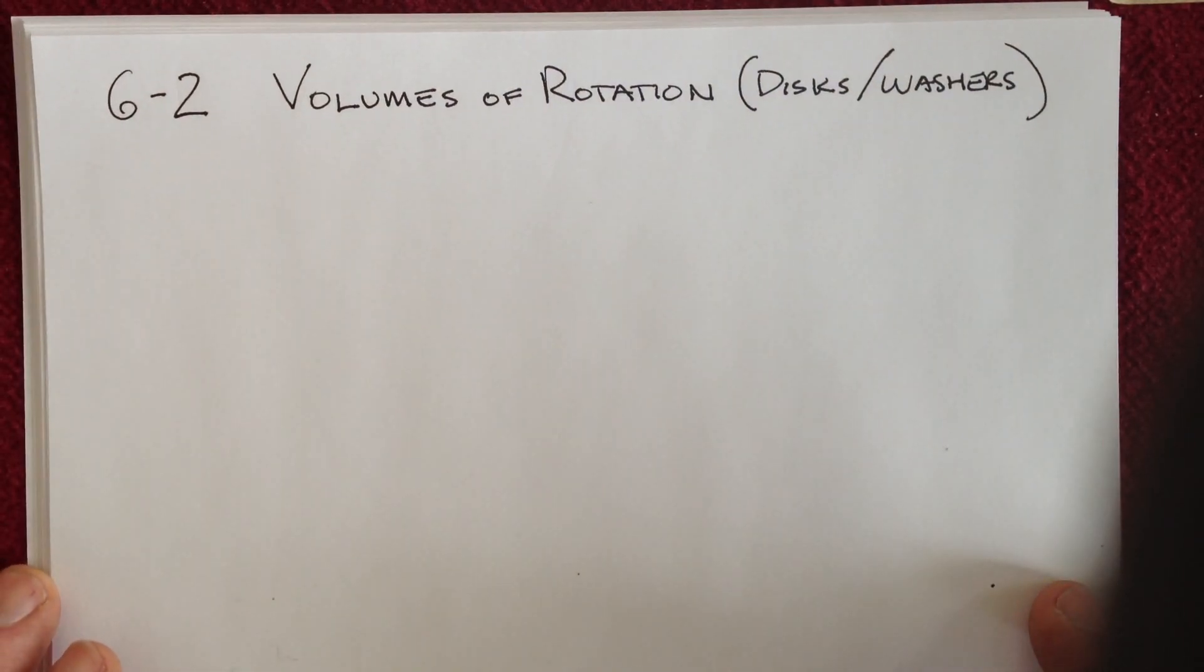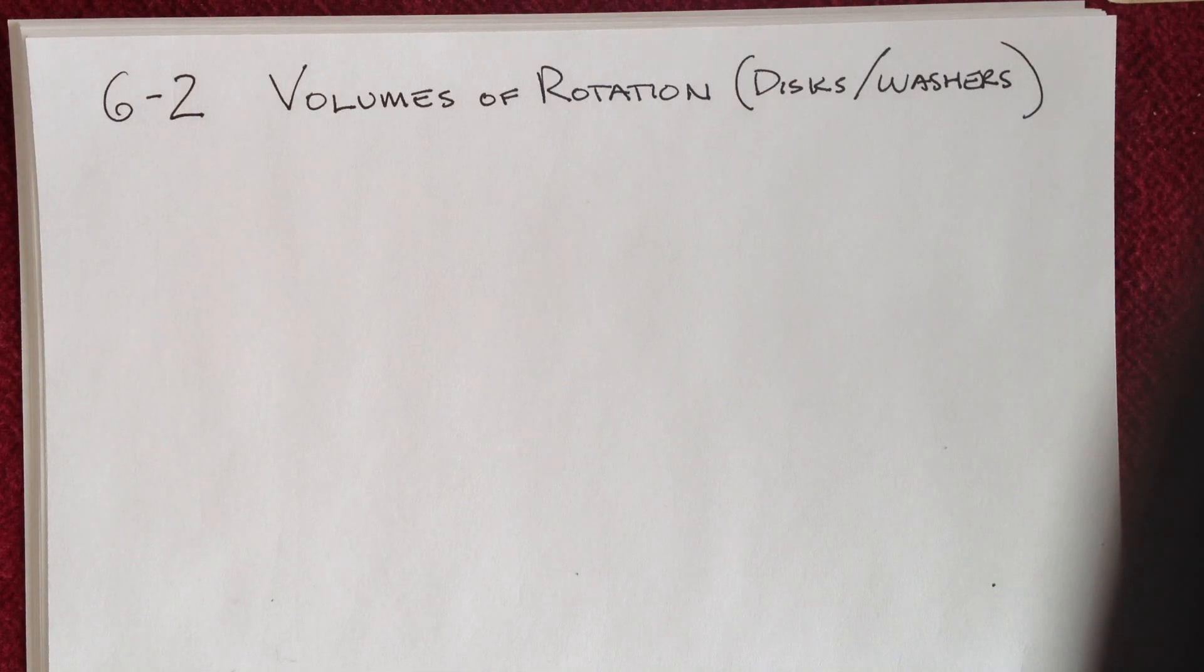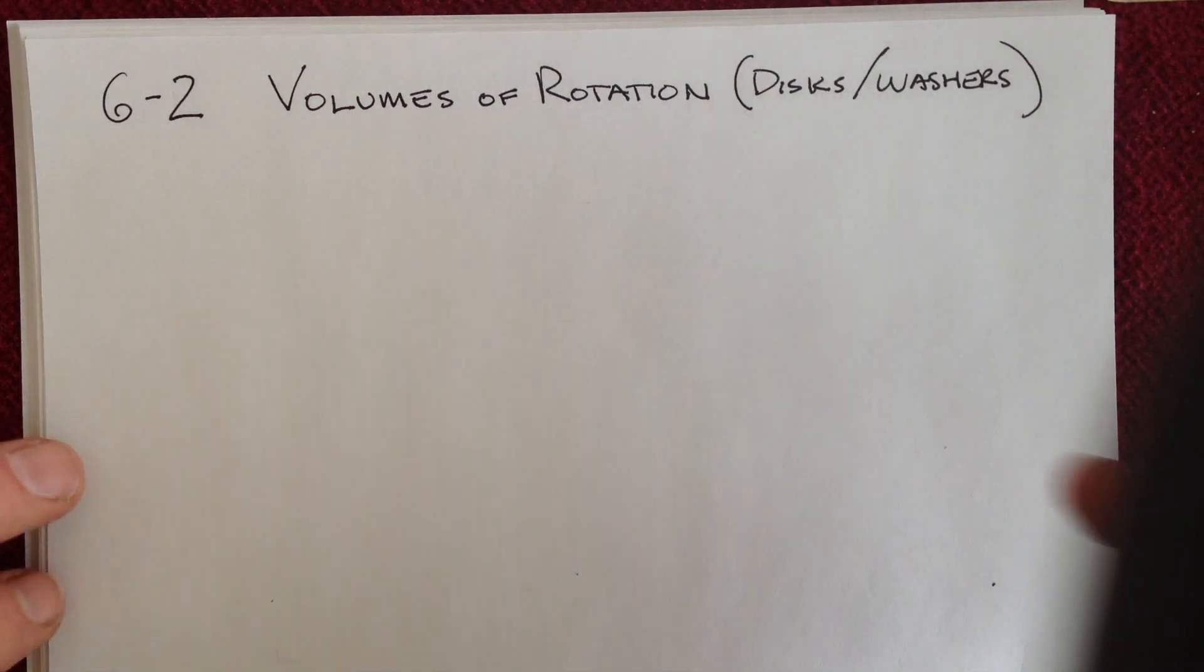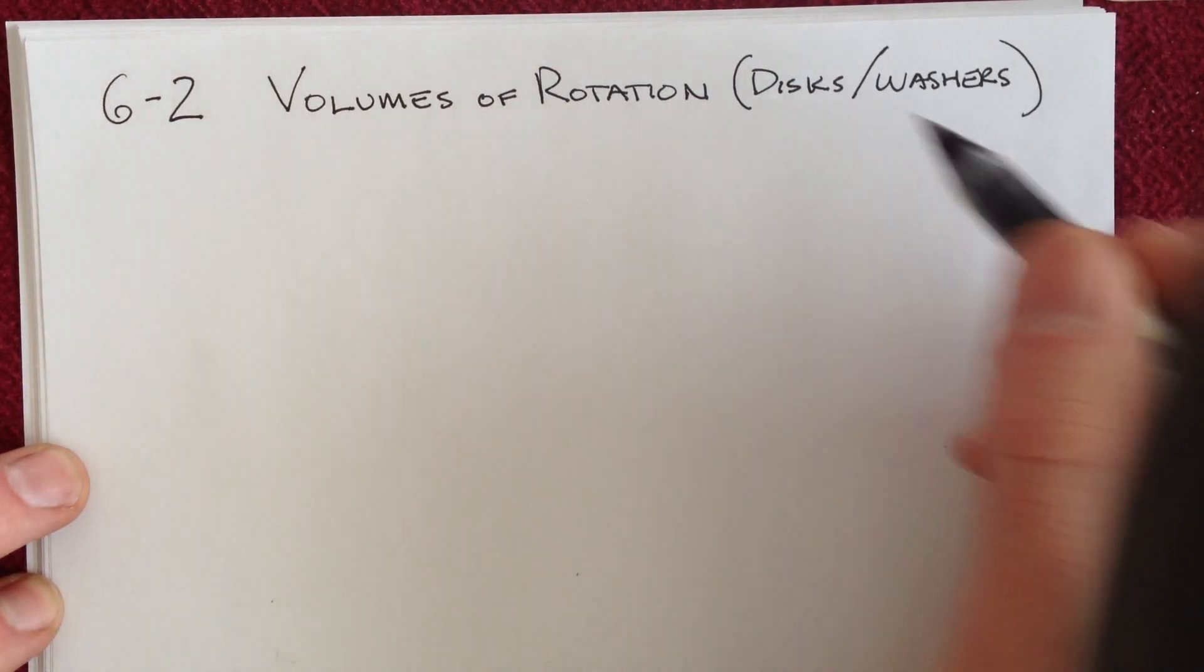Alright, we are moving on to volumes found by rotating a shape over an axis. There are two ways of doing this, and we're going to look at discs and washers. Think of this as method one.